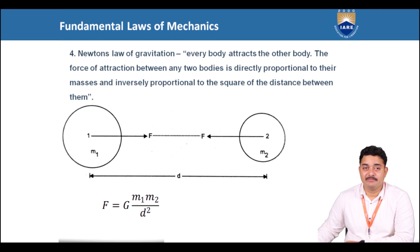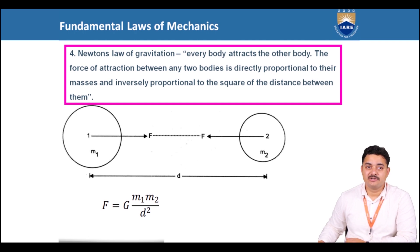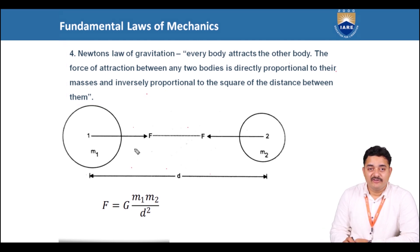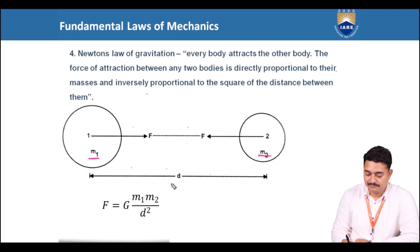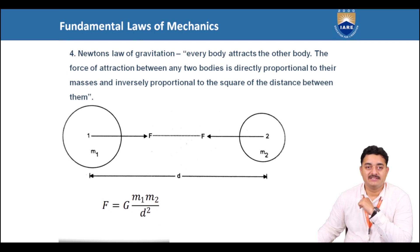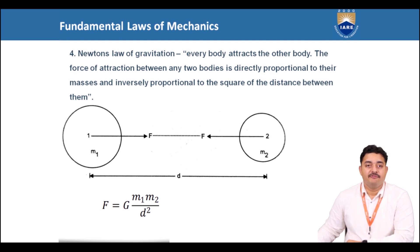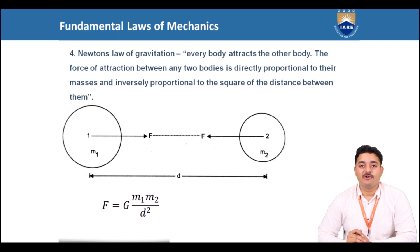Newton's law of gravitation states that every body attracts every other body. The force of attraction between any two bodies is directly proportional to their masses and inversely proportional to the square of the distance between them. Consider two bodies of different masses m1 and m2 at a distance d. The force of attraction F is given as F = G·m1·m2 / d², where G is the constant of proportionality known as the constant of gravitation.